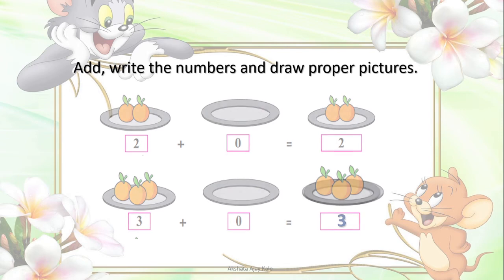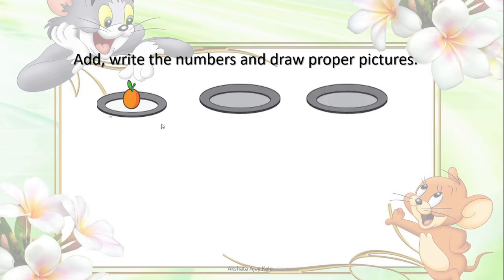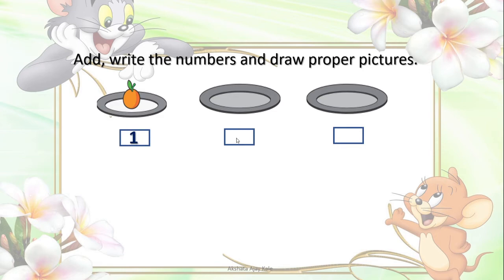We will move to the next one. Here 1 fruit, here nothing is there. We have to find the answer. Whatever is there in the plate, that we will count. Here 1 fruit, so let us write here 1. And here nothing is there, so we will write 0. Now let us add these two — that is 1 plus 0 is equal to 1. Only 1 fruit, so let us write here 1.